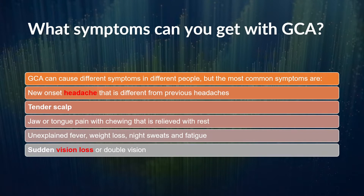What sort of symptoms can you get with giant cell arteritis? There are a host of different ones. Headache is probably the one we see most often, and it's usually different from a normal pattern of headache. Your scalp may be tender to touch. Folks can have jaw pain or tongue pain, particularly with chewing, that gets better with rest — the more you use it, the more you feel it.